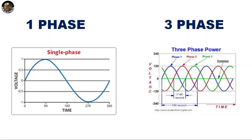This is a sine wave. In one second, in India it will be 50 hertz. So 50 hertz will be one cycle per second. Single-phase will be one cycle, and three-phase will be three cycles.